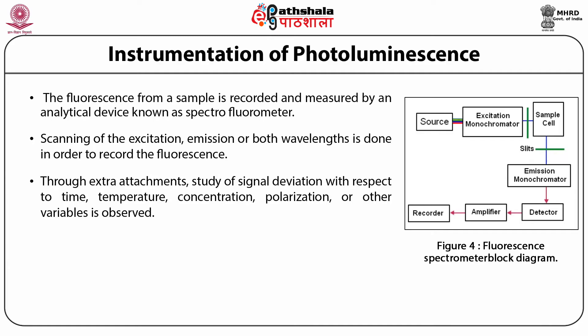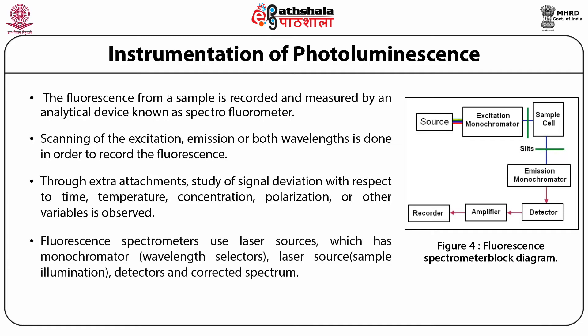Fluorescence spectrometers use laser sources, which have an excitation monochromator as a wavelength selector, then a sample cell followed by slits onto the emission monochromator. Then the detectors are connected to an amplifier and recorder for detecting and recording the corrected spectrum.